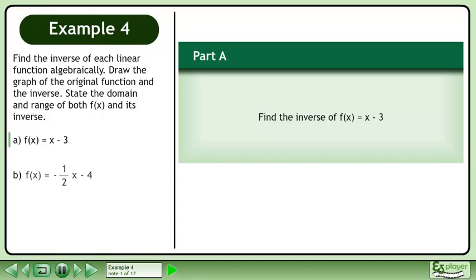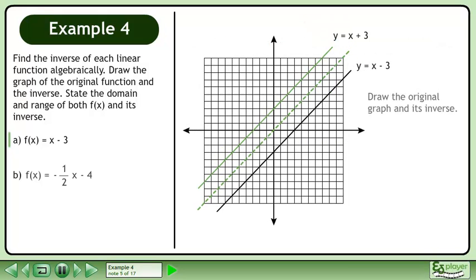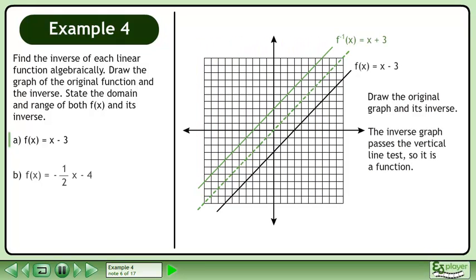In part a, we'll find the inverse of f. To simplify the process of finding the inverse, we write f as y. Next, swap x and y. Now isolate y. This gives us y equals the inverse function. Draw the original graph and its inverse. The inverse graph passes the vertical line test, so it is a function.